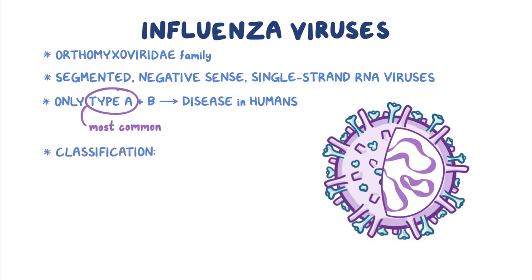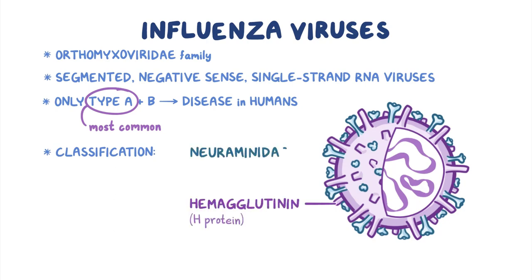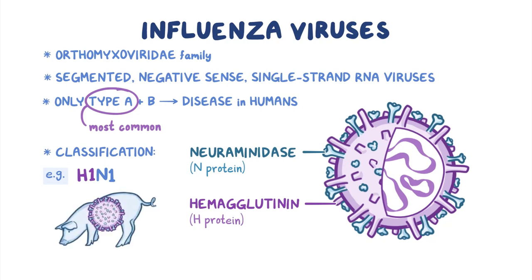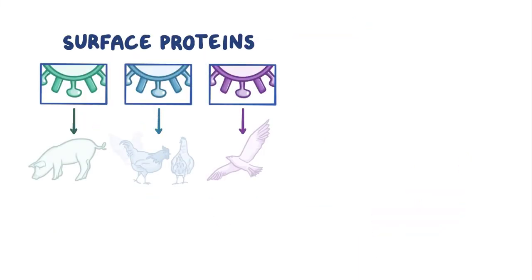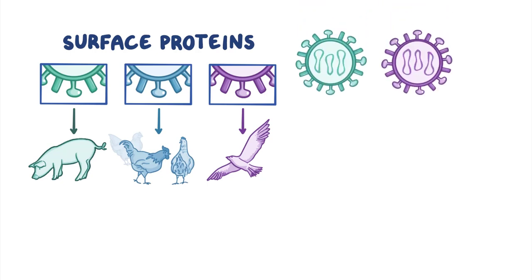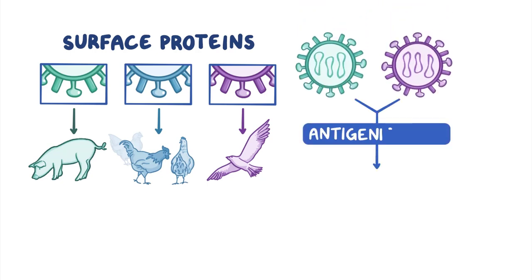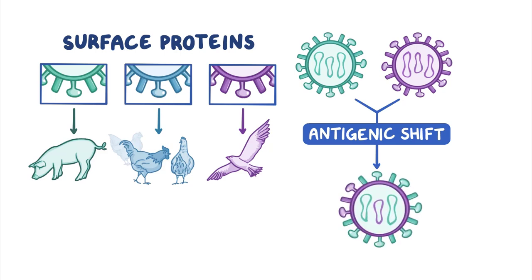Influenza viruses are classified based on two surface proteins: hemagglutinin, or H-protein, and neuraminidase, or N-protein, of which there are many different types. For example, the H1N1 virus that causes swine flu has H-protein type 1 and N-protein type 1. These surface proteins determine what species the virus can infect. However, influenza A viruses can undergo antigenic shifts where two strains mix their genome to create a new virus with a different set of H and N proteins, allowing it to infect different species.